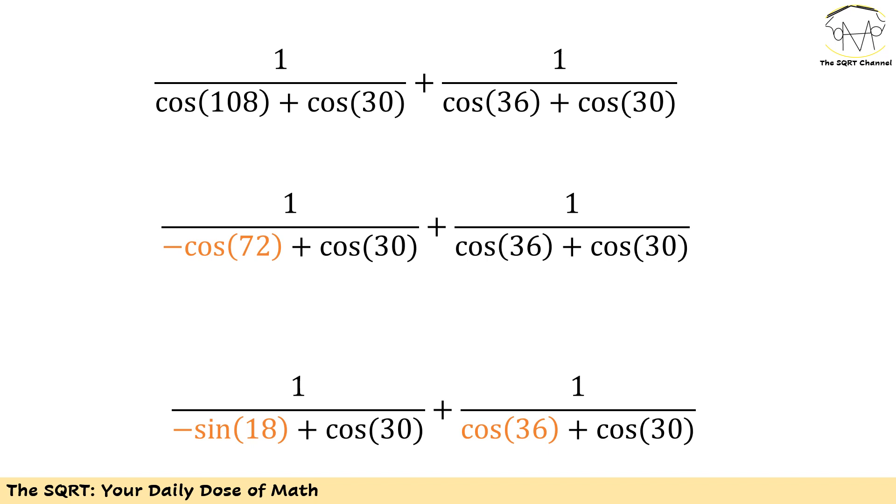Now we have the expression that you see here. In this expression we have cos 30 which is a good thing I think, but we have cos 108 and cos 36 which are unknown for us. I'm going to replace cos 108 with negative cos 72. Let's keep cos 36 as is. Now I'm going to replace cos 72 with sin 18.